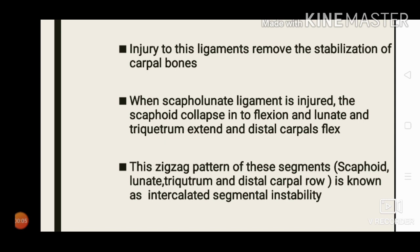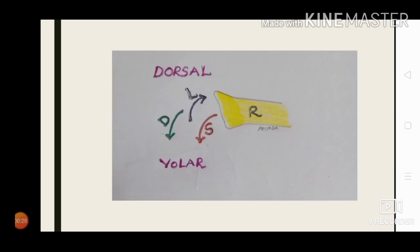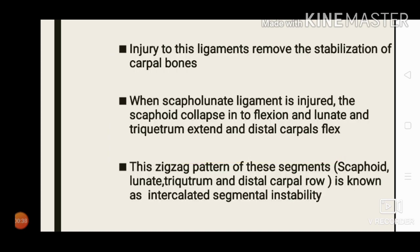Injury to the ligaments removes the stabilization of the carpal bones. When the scapholunate ligament is injured, the scaphoid collapses into flexion — moving forwards — while the lunate and triquetrum extend, moving backwards, and the distal carpal row flexes. In this figure you can see the scaphoid flexing, lunate extending, and distal carpal row flexing. This zigzag pattern of these segments is known as intercalated segment instability.